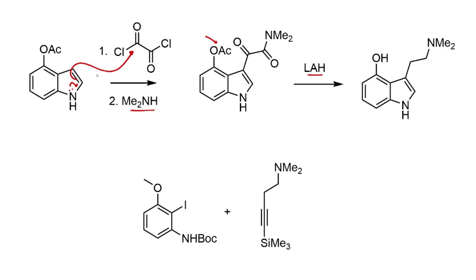The Larock-type route is a bit different: the disconnection takes place across the five-membered ring of the indole. One of the starting materials is the aniline we saw at the beginning, and the other half comes from a substituted trimethylsilyl acetylene.